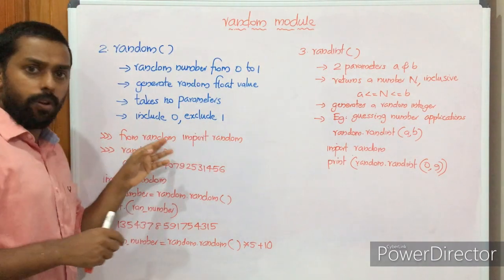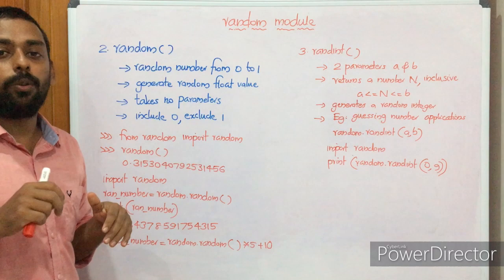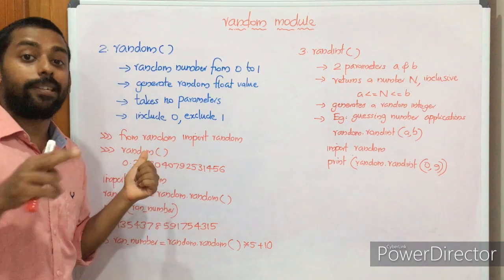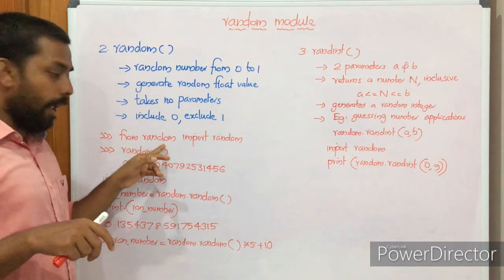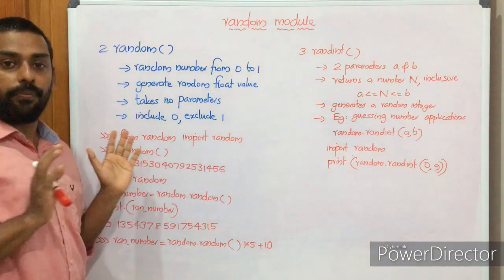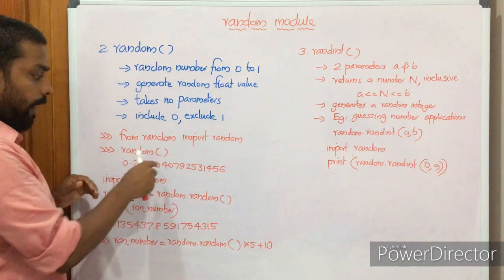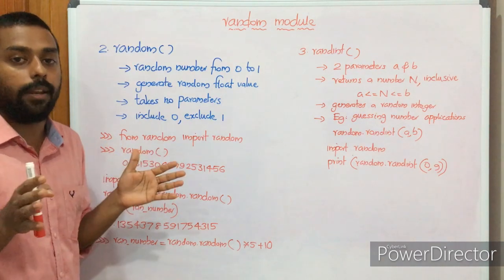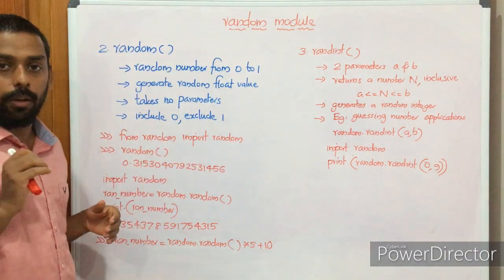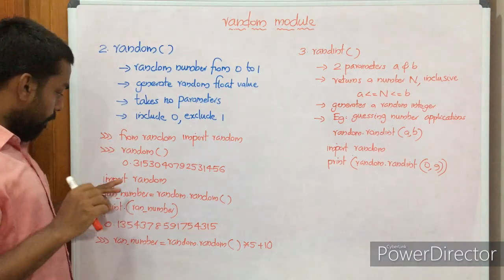We have two ways to import modules. In the first example, we use 'from random import random' — meaning from the module random we are importing the random function. Then we simply call random() with no arguments, and it brings a value like 0.31530. In the second example, we use 'import random', then ran_number = random.random(). Each time it prints a different floating point value between 0 and 1.